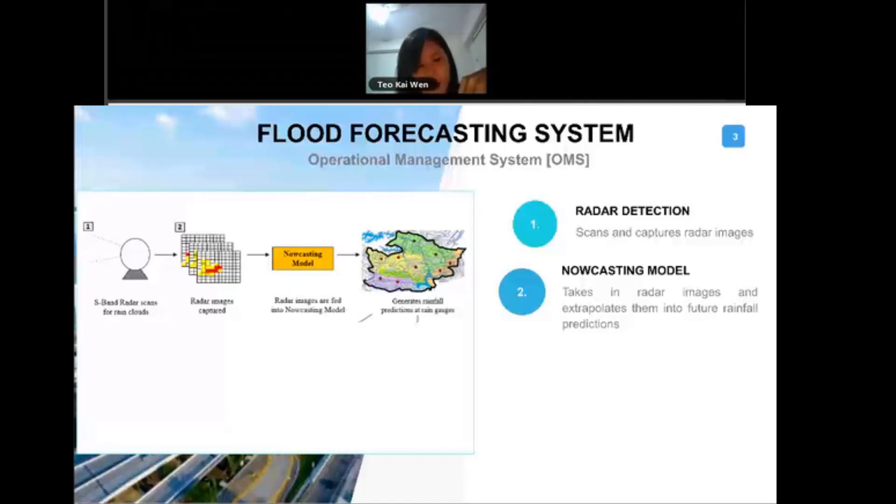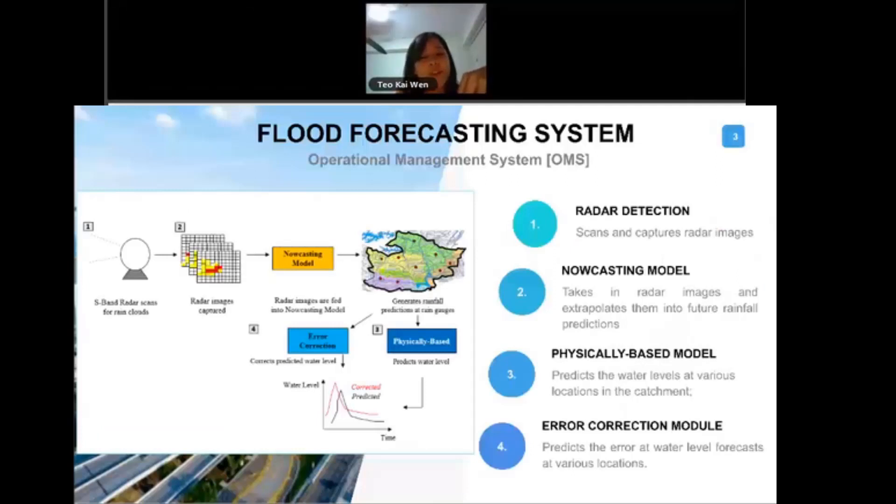There is a flood forecasting system in Singapore, just like many countries in the world. For Singapore, we comprise of four components. The first component is an S-band weather radar. What it actually does is it scans the rain clouds, and then with the radar images captured, it is then being fed into a nowcast model.